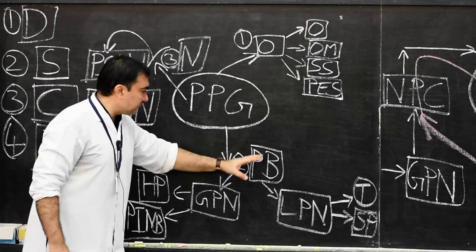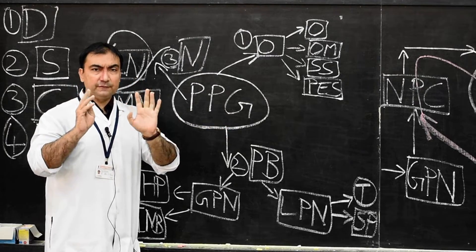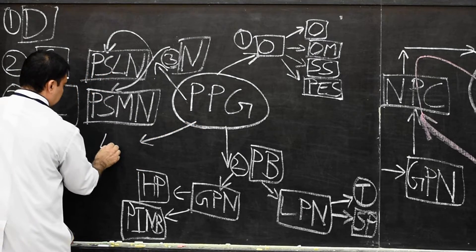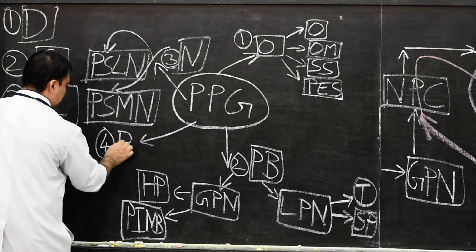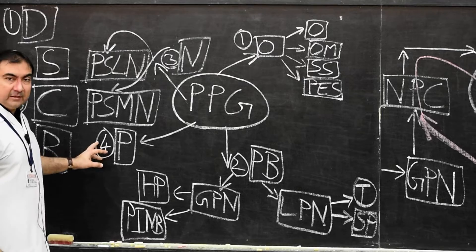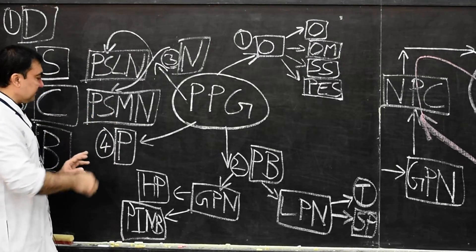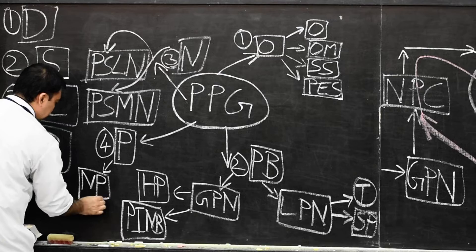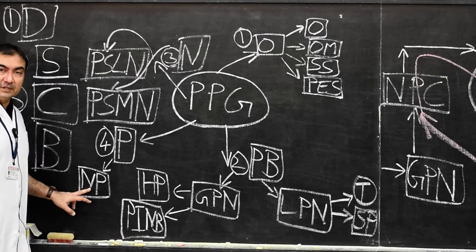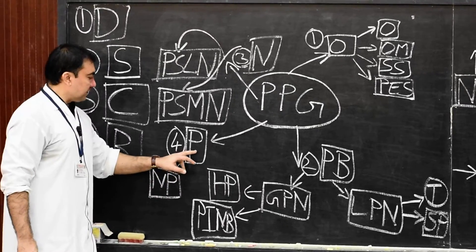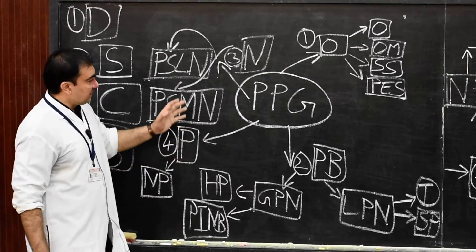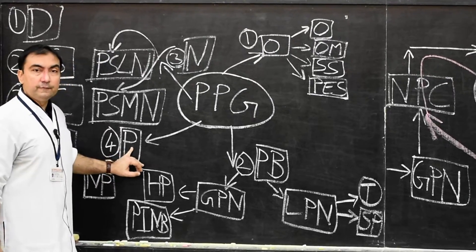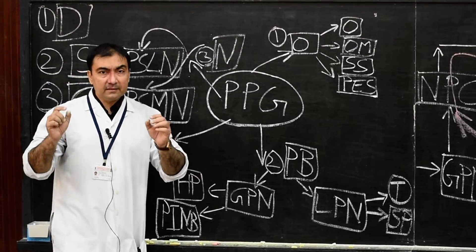The fourth and final branch is the pharyngeal nerve. This pharyngeal nerve passes through the palatovaginal canal and supplies the area of the nasopharynx — specifically the area behind the opening of the auditory tube. With this we finish all four branches of the pterygopalatine ganglion: the orbital branches, the palatine branches, the nasal branches, and the pharyngeal branch. This completes the entire topic of the pterygopalatine ganglion. Thank you very much.